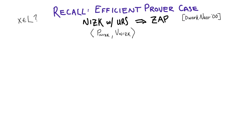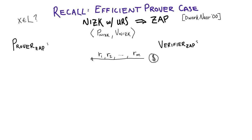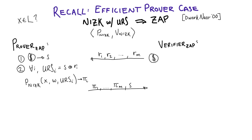Let's recall how Dwork and Naor show the transformation for efficient provers. We start with the NIZK — P and V denote the prover and verifier respectively — and we want to construct this ZAP. The first message needs to be random, so the verifier samples some random strings r1 through rm and sends them to the prover. The prover samples a random string S of his own, then XORs S with each ri to generate a series of URSs. With respect to each URS, he generates a proof and sends it back to the verifier, who accepts if the NIZK verifier accepts all proofs after reconstructing the URSs.